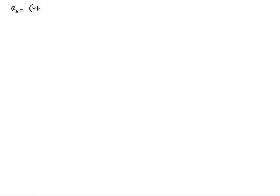In this video we're going to use two methods to show that a given sequence converges to zero. The sequence in question is determined by negative 1 raised to the nth power, multiplied by e to the negative n power, divided by n.